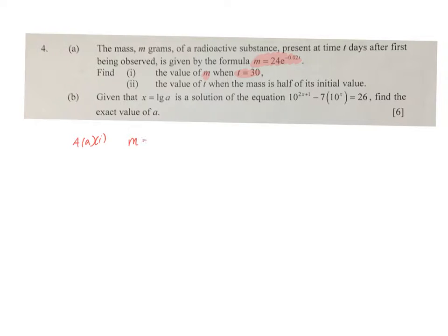So actually, it doesn't really matter because regardless of the context, there's always a similar formula that you need to follow. So just substitute the negative 0.02 and replace the t as 30 and our answer just turns out to be 13.2, to 3 significant figures.